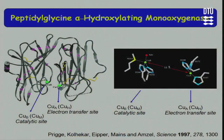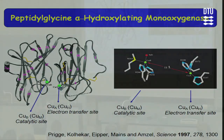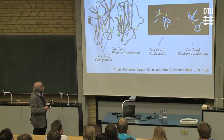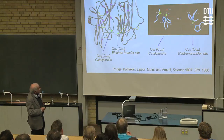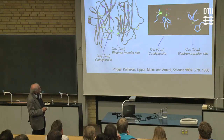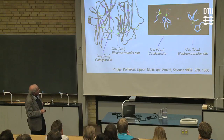The enzyme has two coppers and is mostly a beta-sheet enzyme. It was known before the structure was determined that the two coppers were not electronically coupled — they are two single-site coppers. The distance between the coppers in the resting structure is 11 Ångströms. One copper is coordinated by two histidines and a methionine, and the other copper is coordinated by three histidines.